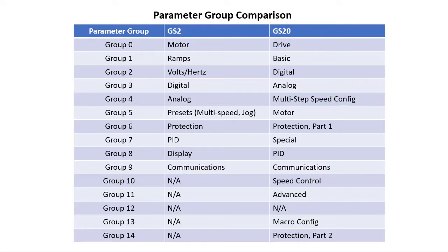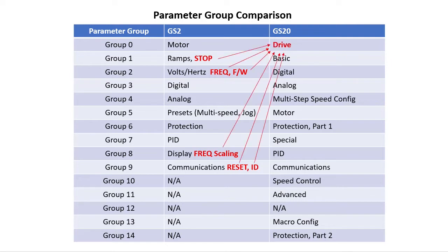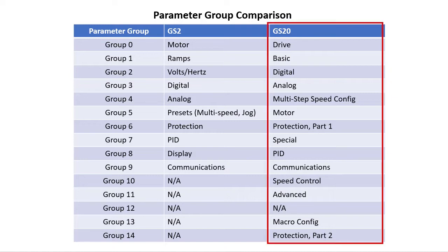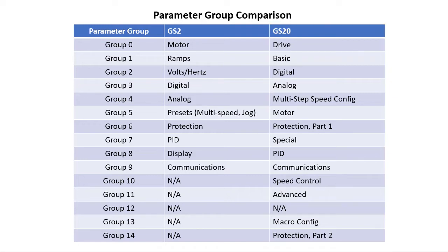For example, in the GS2 the drive-specific parameters like factory reset, drive ID, frequency, frequency scaling, firmware versions and stop methods are all spread around the groups. In the GS20, all the drive-specific stuff is in the drive group. That makes things so much easier to find and manage. So let's quickly skim through each of these GS20 parameter groups and highlight the similarities and differences of the two drive families.